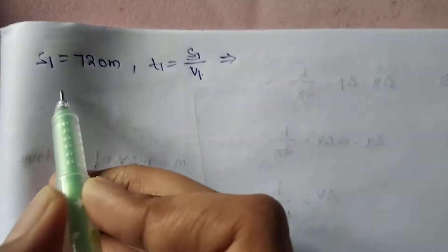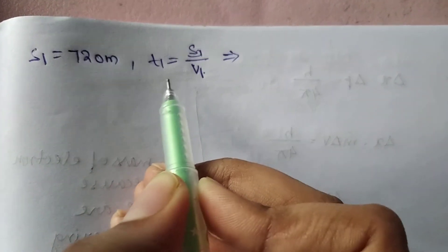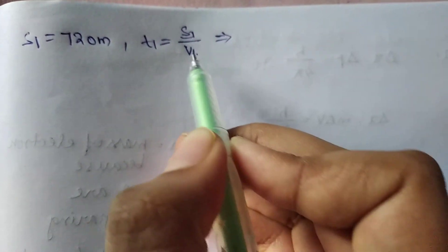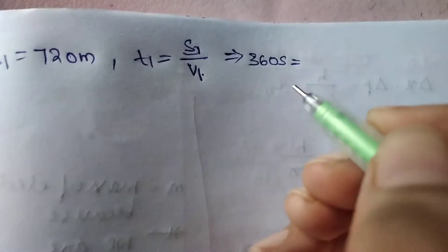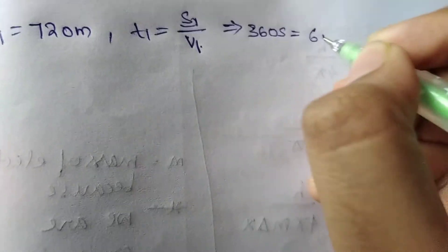We know s1 = 720 meters, and t1 equals distance by velocity. Now we can write this, and if we calculate we get t1 = 360 seconds, which equals 6 minutes.